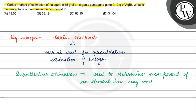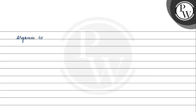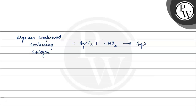We have to find the method used for quantitative estimation of halogen. When we look for halogen, we ultimately find the method using the silver salt of that halogen, where X can be chlorine, bromine, or iodine. Let's estimate from this.